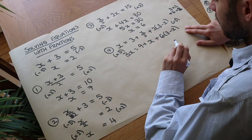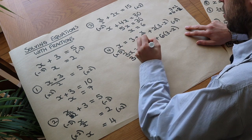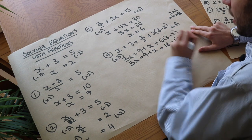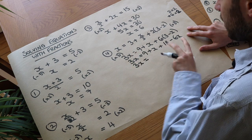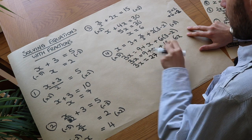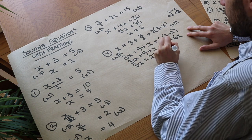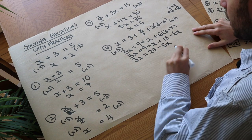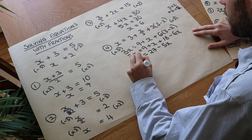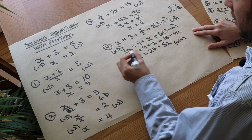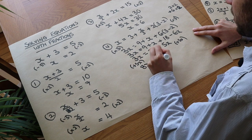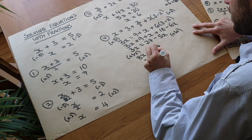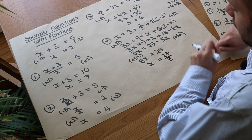Now we expand out and simplify. We get 3x equals 9 plus x plus 18 minus 6x. Collecting like terms: 9 plus 18 is 27, and x minus 6x is minus 5x. Since we have x's on both sides, we collect on the side with more x's. 3x is bigger than minus 5x, so we add 5x to both sides: 3x plus 5x is 8x equals 27. Dividing both sides by 8 gives x equals 27 over 8.